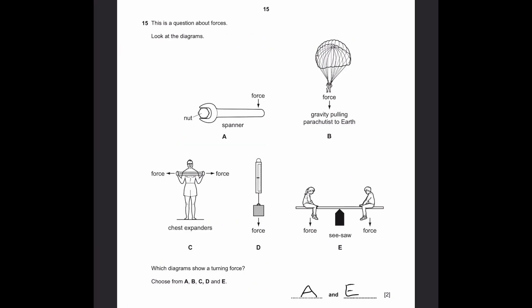Question 15. This is a question about forces. Look at the diagrams. Which diagrams show a turning force? Diagram A shows a spanner screwing a nut with force applied, so it'll keep rotating as you screw the nut in. Diagram E shows a seesaw. Let's say the boy is heavier than the girl. The boy will apply a turning force so the seesaw turns. So A and E are the answers.